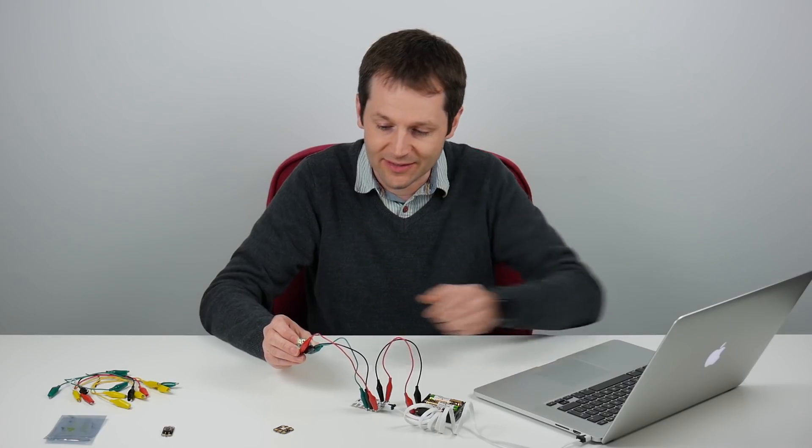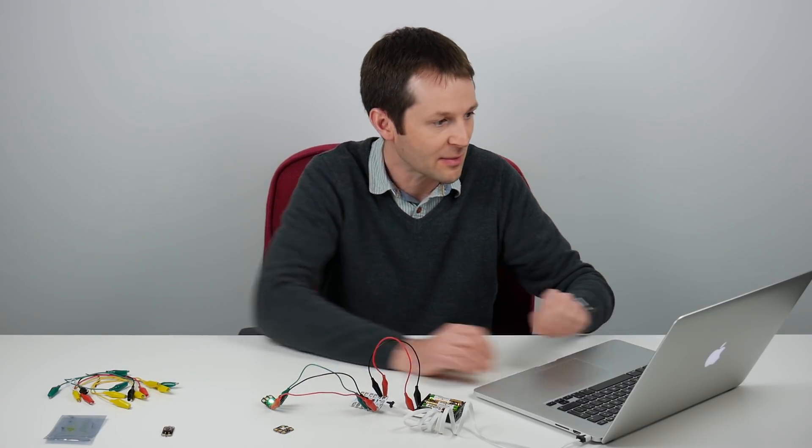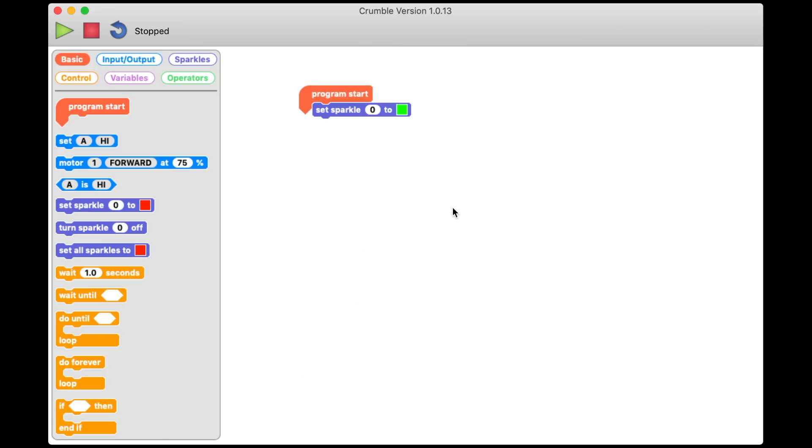To build on that we want to have our flashing red and blue light. So go back to my program. We've got our simple program that sets the sparkle to green and now we want to change it to go between red and blue.